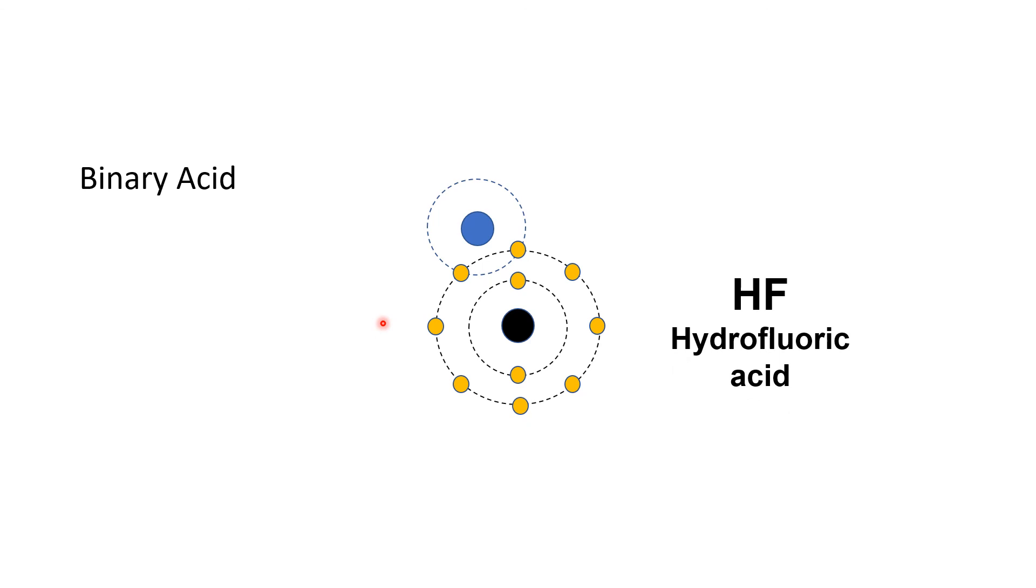Some other binary acids, such as HCl or hydrochloric acid, HBr or hydrobromic acid, and HI or hydroiodic acid, are also formed through covalent bonding. They just differ in size because each of the halogen elements have different number of energy levels.